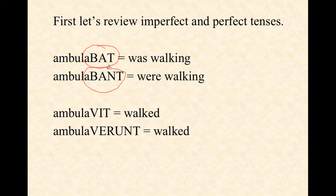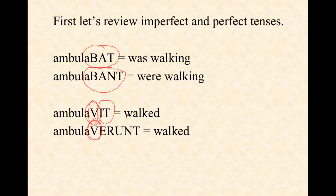Ambulat would be he, she, or it walks. But ambulavit — we have a V, and then the ending is -it. When you have that, it's he, she, or it, some singular subject, walked. The plural is ambulaverunt. Again, we've got this V, which for the time being is going to be a mark of the perfect tense. All the ones we have will have it, and the ending is -erunt: they walked.